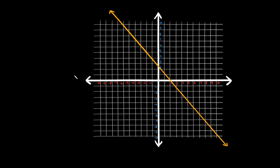Now let's try an example with a negative slope — we should expect to get a negative answer. The slope equals rise over run. The intercepts don't fall cleanly on grid corners here, so we need to find other exact points on the graph. We can see the line lands exactly on one grid corner, and then another grid corner further along the line.